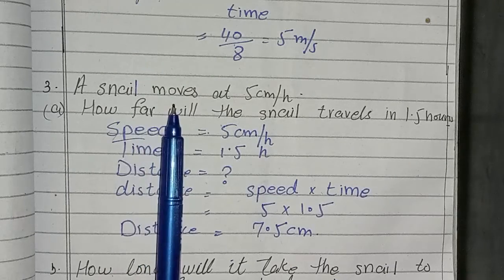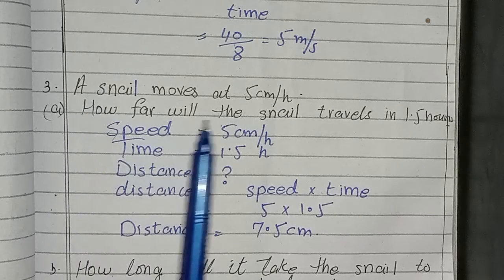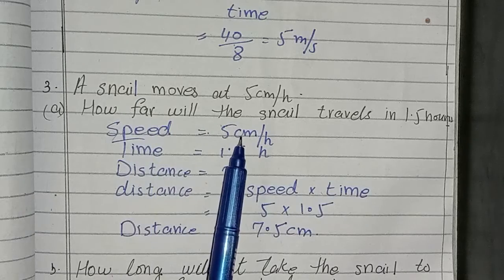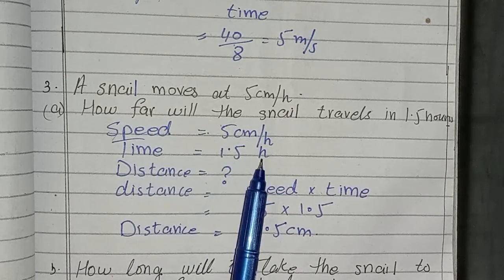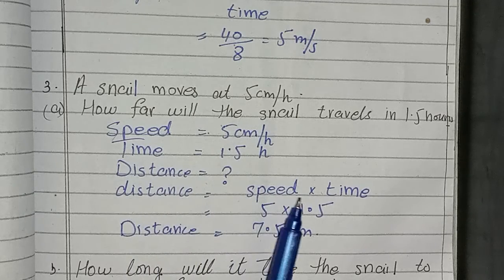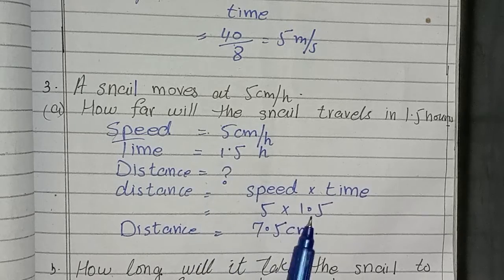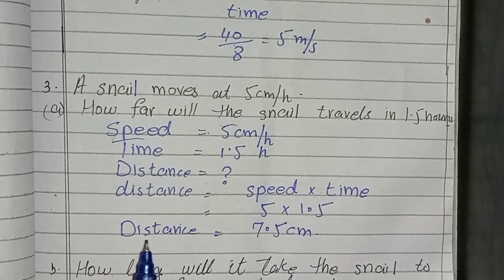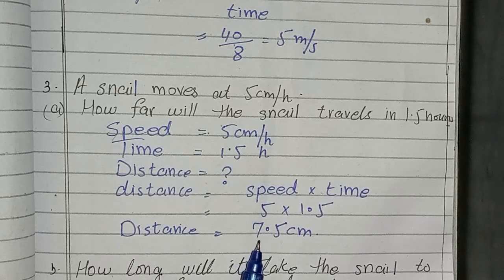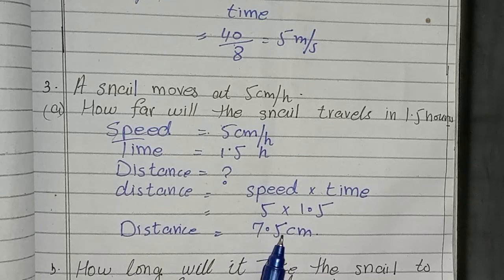Third question is: a snail moves at 5 cm per hour. How far will the snail travel in 1.5 hours? Speed is 5 cm per hour, time is 1.5 hour, distance is not known. Distance is equal to speed multiplied by time. You have to put it here. Time is given here, and then multiply them. After the answer is 7.5 cm.